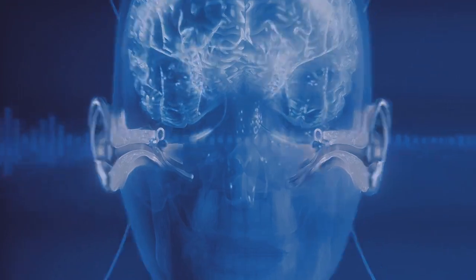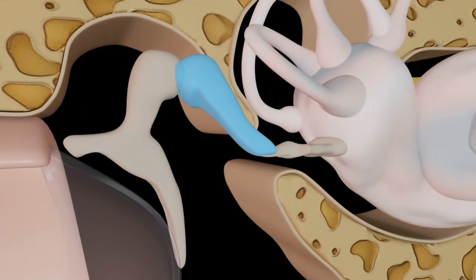Additionally, the vestibular system in the inner ear helps maintain balance by detecting head movements and changes in position.